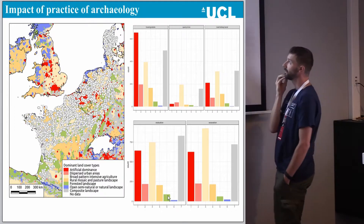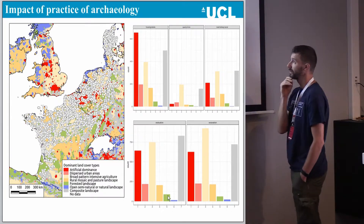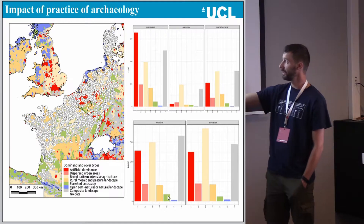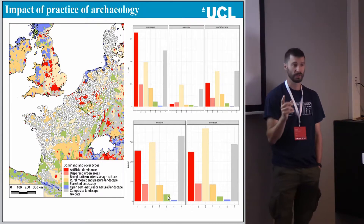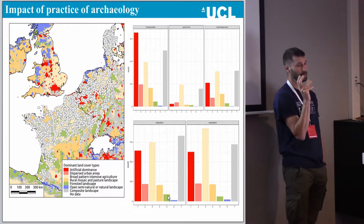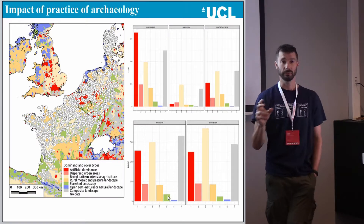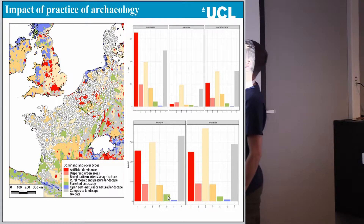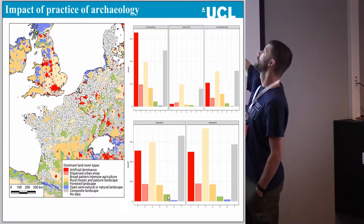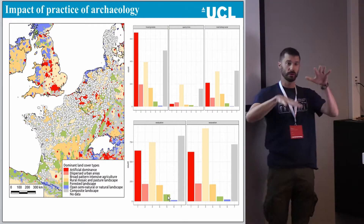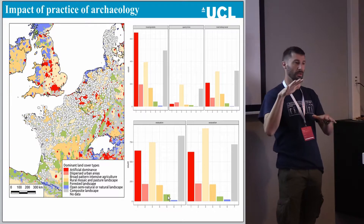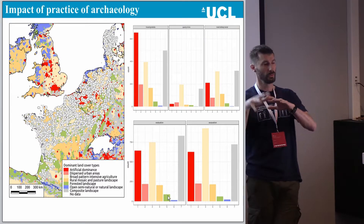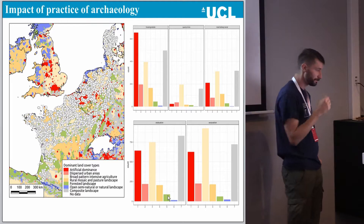Interestingly, if you compare any type of trial trenching versus full excavation, you see exactly the same trends — the nature of the work does not differ. However, if you compare housing versus quarry versus road, you can see that the distribution fluctuates. So depending on the kind of work you look at, you will have different distributions.